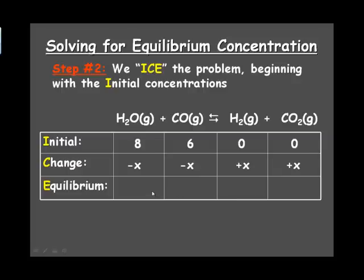Now the equilibrium concentration then is simply a sum of those two. So for the water it's going to be 8 minus X, for CO 6 minus X, and then for H2 and CO2, because we've started with nothing and then there's been a positive X change, you simply end up with X concentrations at equilibrium.